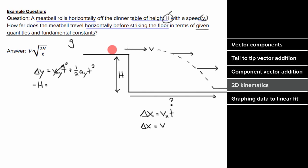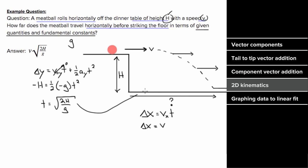The acceleration is negative 9.8, but written in terms of fundamental constants that's negative g. This lets us solve for t, giving the square root of 2h over g, which we can now substitute back to get the horizontal displacement of the meatball before it hits the ground.